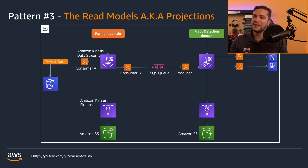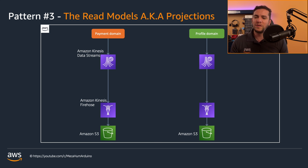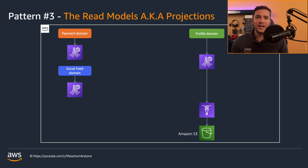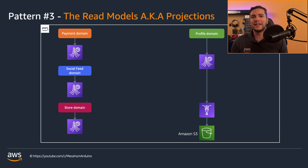This is the serverless architecture we built in the previous pattern. I'm going to simplify it, remove some components, make room for others, and add more domains for a more realistic approach — a social feed domain and a store domain that handles new items in the store.